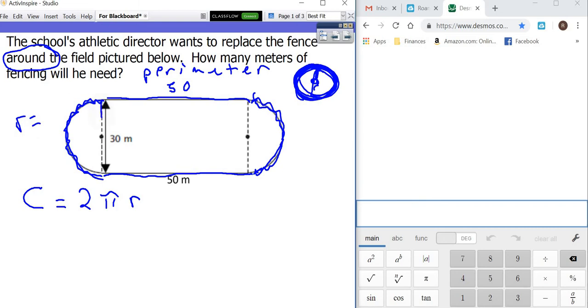So before we do anything else, we have to figure out what the radius is. Well, I know that my diameter is 30 meters. And if we divide that by 2, that means our radius is 15 meters.